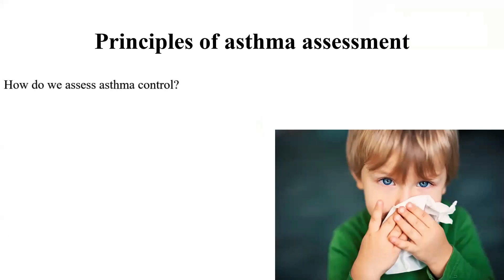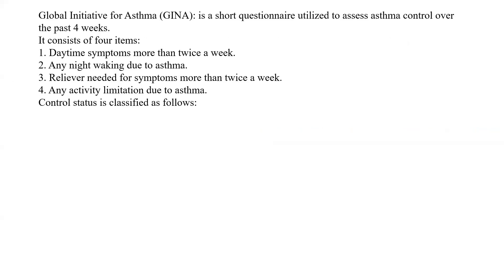The question is: how do we assess asthma control? According to GINA - the Global Initiative for Asthma - it is a short questionnaire utilized to assess asthma control over the past four weeks, which consists of four items: daytime symptoms more than twice a week, any night waking due to asthma, reliever needed for symptoms, and any activity limitation.